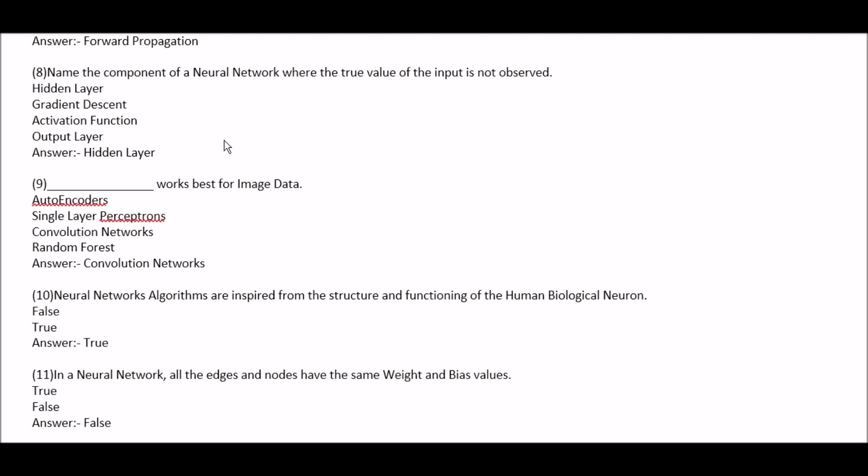Name the component of a neural network where the true value of the input is not observed. Option A: hidden layer. Option B: gradient descent. Option C: activation function. Option D: output layer. Right answer is option A, hidden layer.